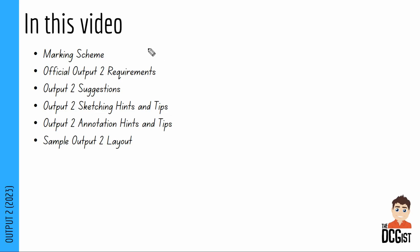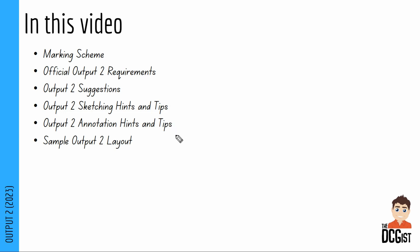Looking more specifically at what we cover in the video: we're going to look at the marking scheme, comparing it to what used to be output 3 before. We're going to look at the official output 2 requirements. We'll then look at some suggestions as to what you should put on this page. We'll give some sketching hints and tips to help you maximize the marks you get with your sketching and the annotation that goes with that, which is always really important throughout all the different parts of the student assignment.